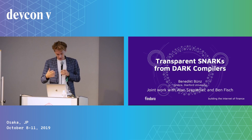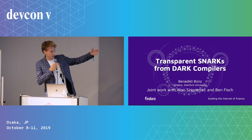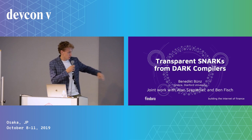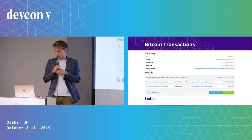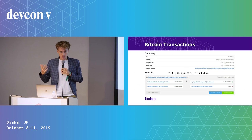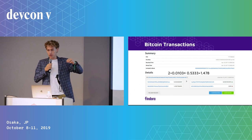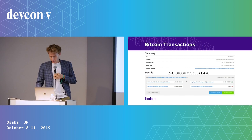The main problem that zero-knowledge proofs solve is something you can see in the Bitcoin transaction, and the same holds for Ethereum transactions. If I want to check the validity of a Bitcoin transaction, the check is that the sum of the inputs is greater than or equal to the sum of the outputs. To do this check — to check that the transaction is valid — I need to know these amounts, how much money is being sent. In Ethereum, I need to check that the person sending money has enough balance in their account.